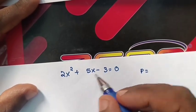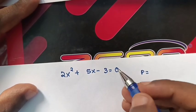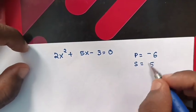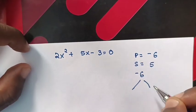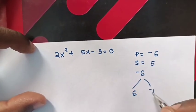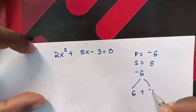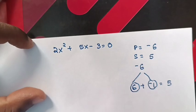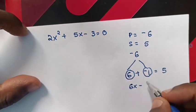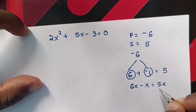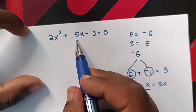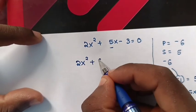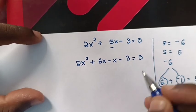For factorization, the product is the coefficient of x squared times the constant: 2 times negative 3 is negative 6, and the sum must equal the coefficient of x, which is 5. To get a product of negative 6 and a sum of 5, the factors are 6 and negative 1. So 6x minus x equals 5x. Substituting into the equation: 2x squared plus 6x minus x minus 3 is equal to 0.